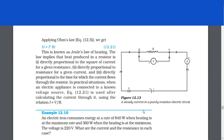Joule's law implies that heat produced in a resistor is directly proportional to the square of current for a given resistance, directly proportional to resistance for a given current, and directly proportional to the time for which the current flows through the resistor. In practical situations when an electric appliance is connected to a known voltage source, equation 12.21 is used after calculating the current through it using the relation I = V/R.